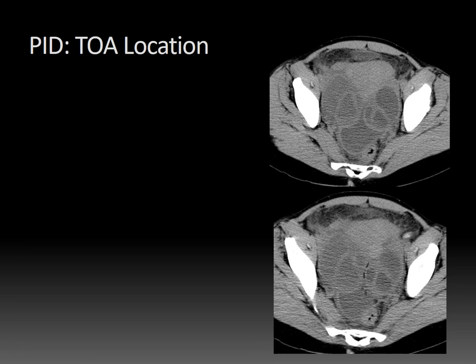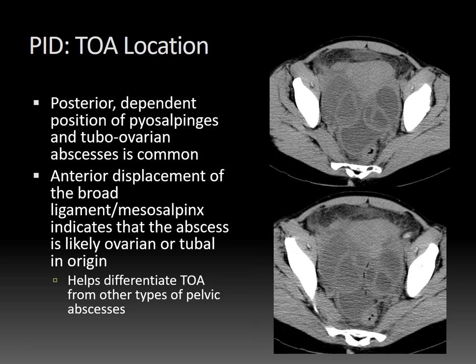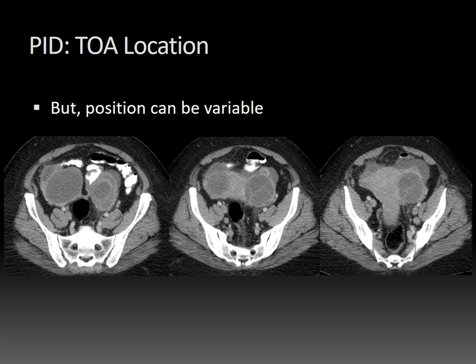A note about tubovarian complex location: posterior-dependent position of the pyosalpinges and tubovarian abscesses is common. Associated anterior displacement of the broad ligament mesosalpinx indicates the abscess is likely ovarian or tubal in origin. The portion of the broad ligament that forms the mesentery of the fallopian tube is the mesosalpinx, and here you can see it displaced anteriorly by these posterior bilateral tubovarian abscesses. This will help you differentiate TOA from other types of pelvic abscesses. Note also the extensive anterior pelvic fat stranding, classic for pelvic inflammatory disease.